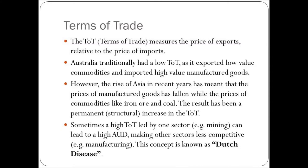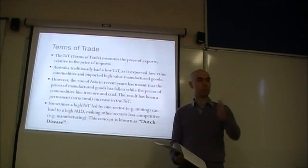The Terms of Trade measures the price of exports relative to the price of imports — not volumes, it is prices. Australia has traditionally had a low Terms of Trade as it exported low-value commodities and imported high-value manufactured goods. However, the rise of Asia in recent years has meant that the price of manufactured goods has fallen, while the price of commodities like iron ore and coal has risen. The result has been a permanent structural increase in the Terms of Trade — it's a structural change, not a cyclical, temporary thing.